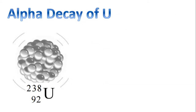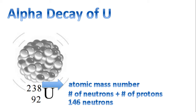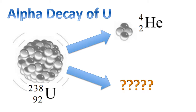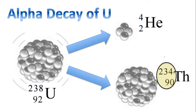Let's look specifically at the alpha decay of uranium-238. The 92 refers to the number of protons — this is called the atomic number. The 238 is the atomic mass number, which is the number of neutrons plus the number of protons. Working backwards, you can determine that there are 146 neutrons in total. So when uranium decays, we end up with a helium nucleus being ejected or emitted from the uranium nucleus, and something else being created — a smaller nucleus called thorium-234-90.